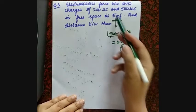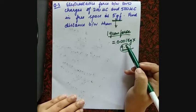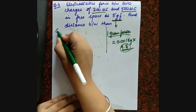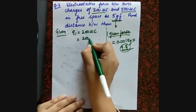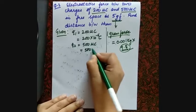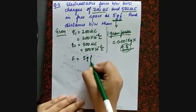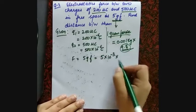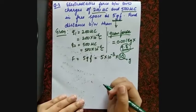For 5 gram-force: F = 0.05 × 9.8 N. Given: Q1 = 200 microcoulombs = 200×10⁻⁶ C, Q2 = 500 microcoulombs = 500×10⁻⁶ C, and force = 5 gf = 5×10⁻³ kg × 10 = 50×10⁻³ N (using g = 10 for easier calculation).